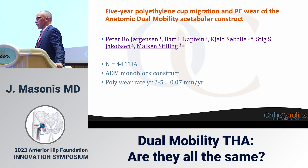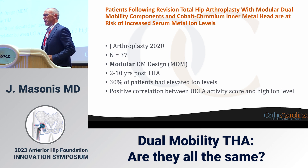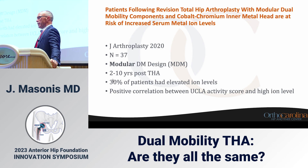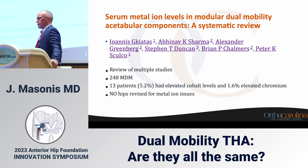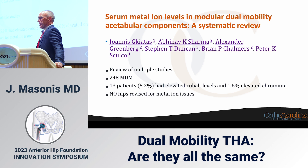Metal ions in dual mobility is a source of concern. A 2020 study found that modular dual mobility components with cobalt-chromium metal heads are associated with an increased risk of elevated metal ions. In a modular dual mobility design studied at two to ten years post total hip, 30% of patients had elevated metal ion levels, associated with higher activity index scores. A review of 248 modular dual mobilities showed 5% of patients had elevated cobalt levels and 1.6% elevated chromium, though no hips had been revised for metal ion issues at that time frame.